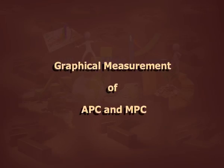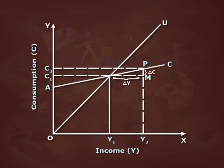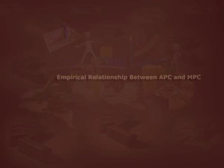Graphical measurement of APC and MPC. Diagrammatically, the average propensity to consume is measured at a single point on the C curve. In the figure, it is determined at point A where C/Y gives APC. The marginal propensity to consume is measured by the slope or gradient of the C curve. To ascertain the slope, we draw a horizontal line through A and measure vertically to the tangent at point P. We find that the ratio of the vertical length PM to the horizontal length AM is 0.8.